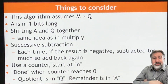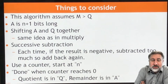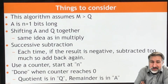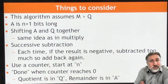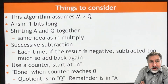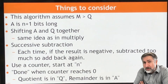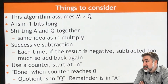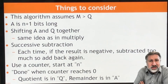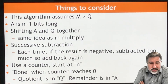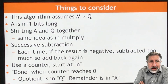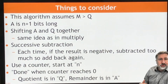The algorithm assumes that the dividend is bigger than the divisor. If it's not, then we'll just get a remainder equal to the divisor. For floating point numbers we can do other things, but the algorithm for floating point division is significantly more complicated and you'll see that at the end of the course. We're doing successive subtraction, which means each time if the result is negative we subtracted too much, and we're going to be done when the counter reaches zero.